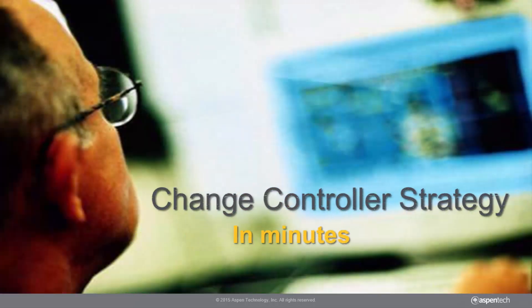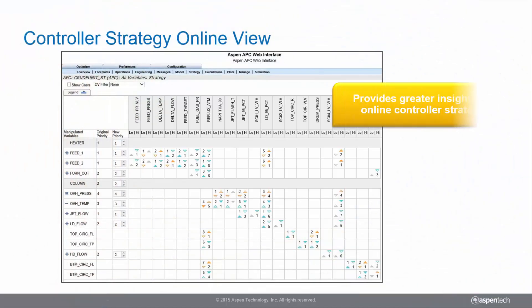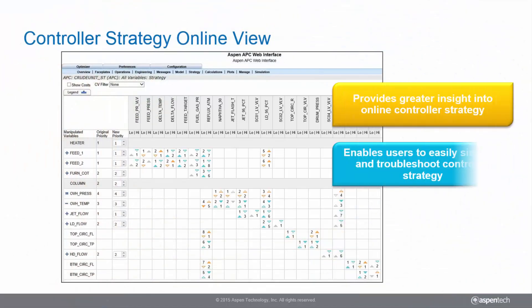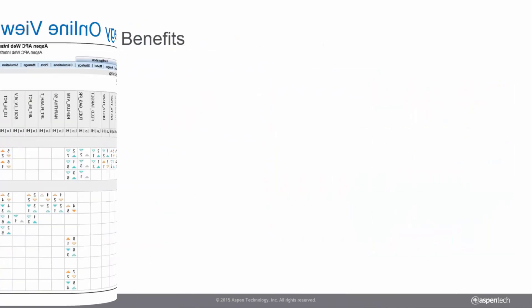It also allows the user to effortlessly change the controller LP strategy in minutes. The Production Control web server now visually displays the controller strategy in a much more intuitive way for both operators and engineers.